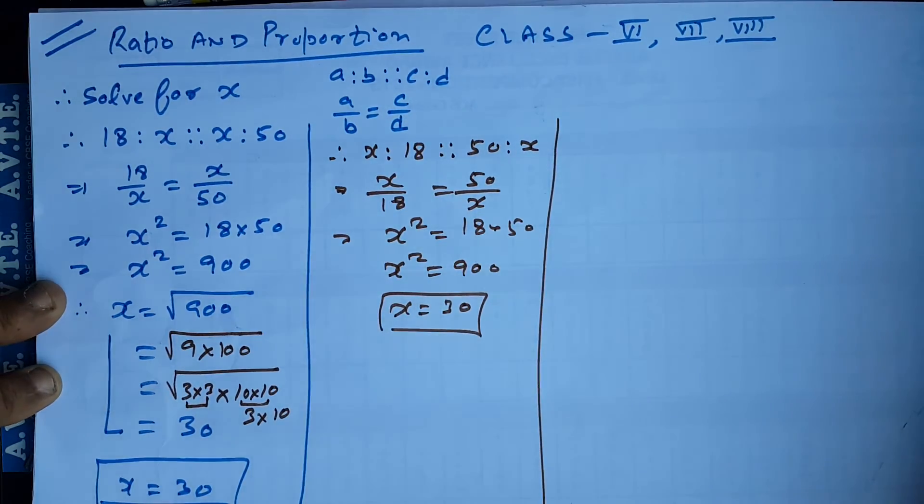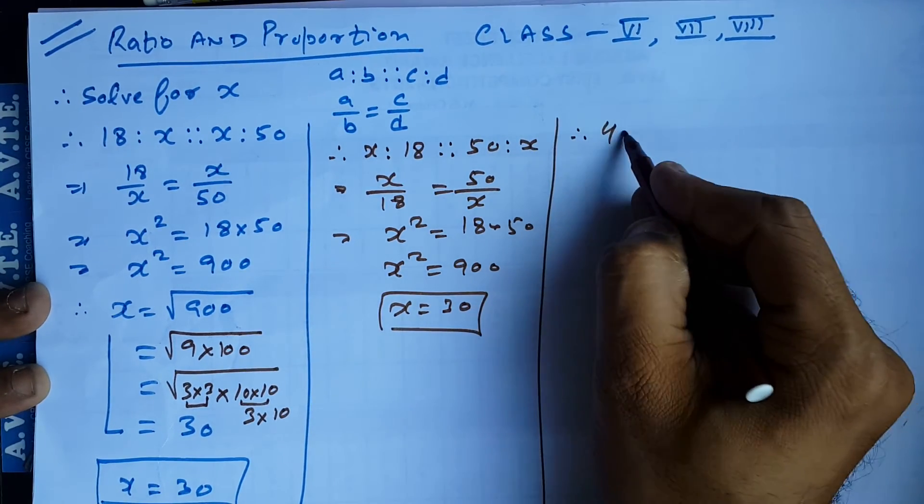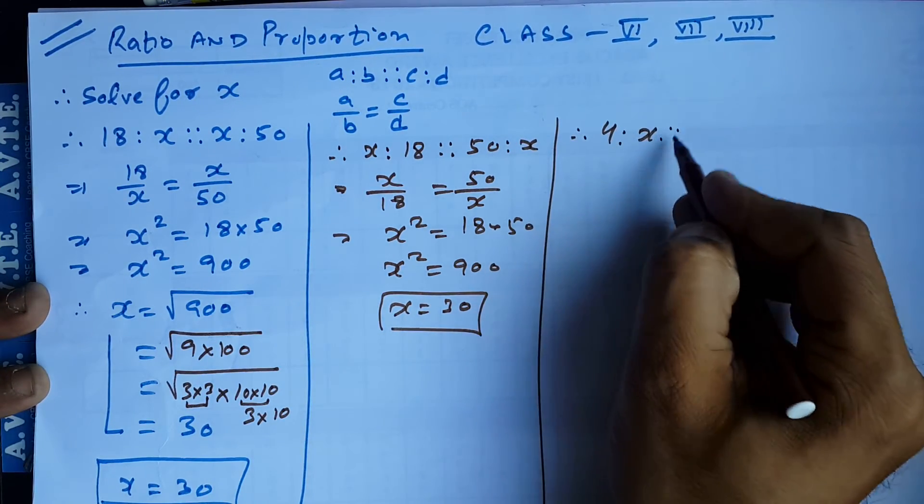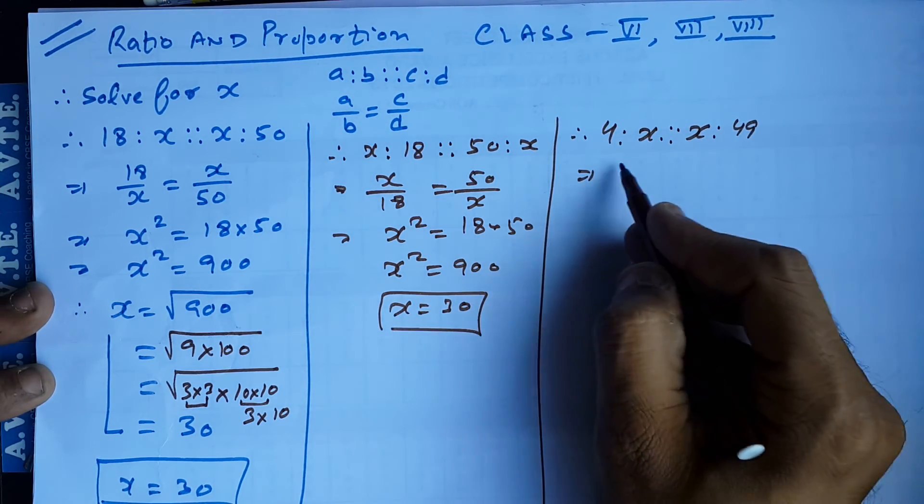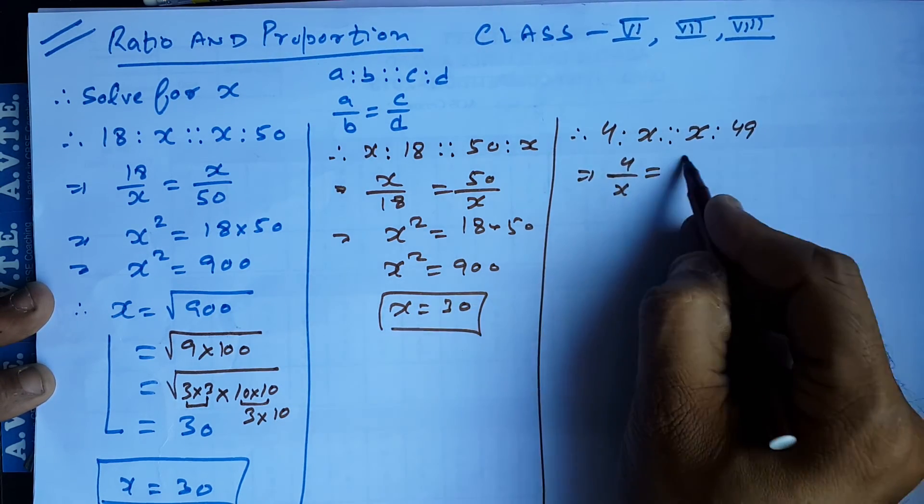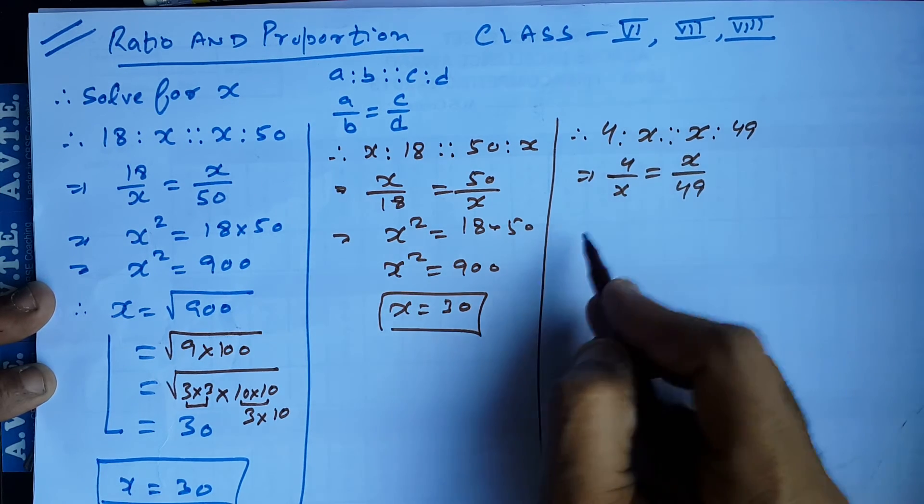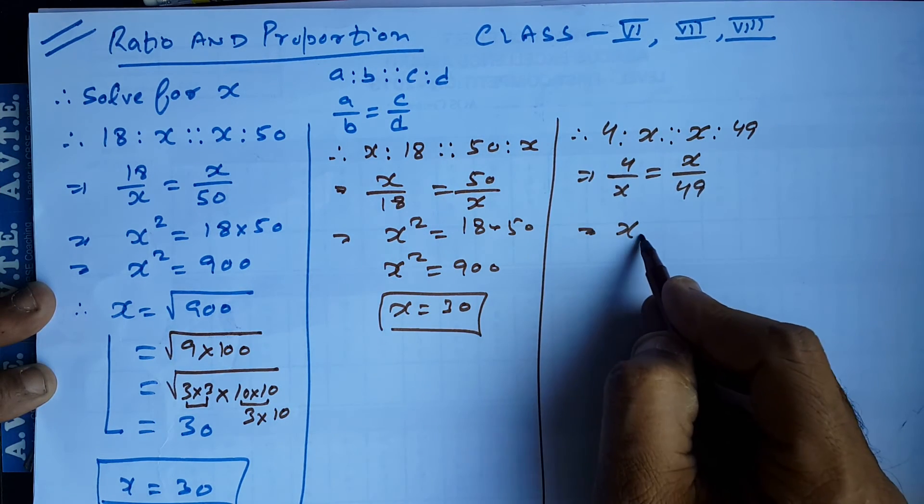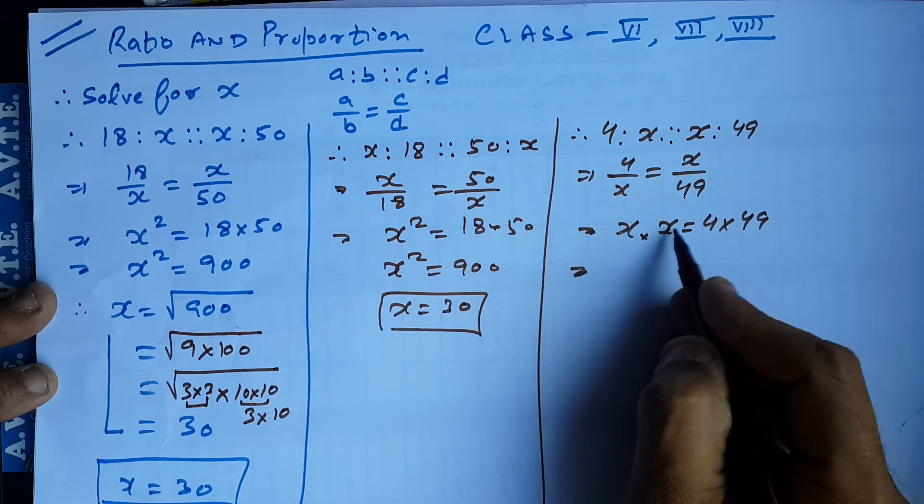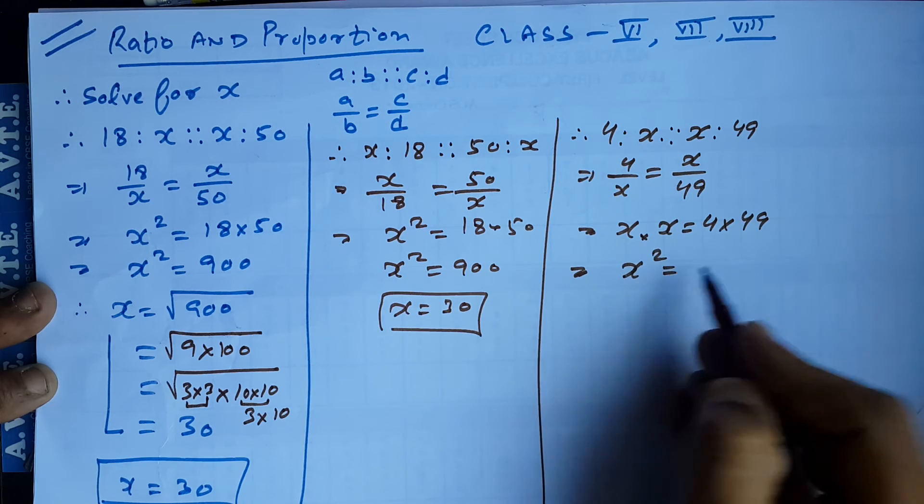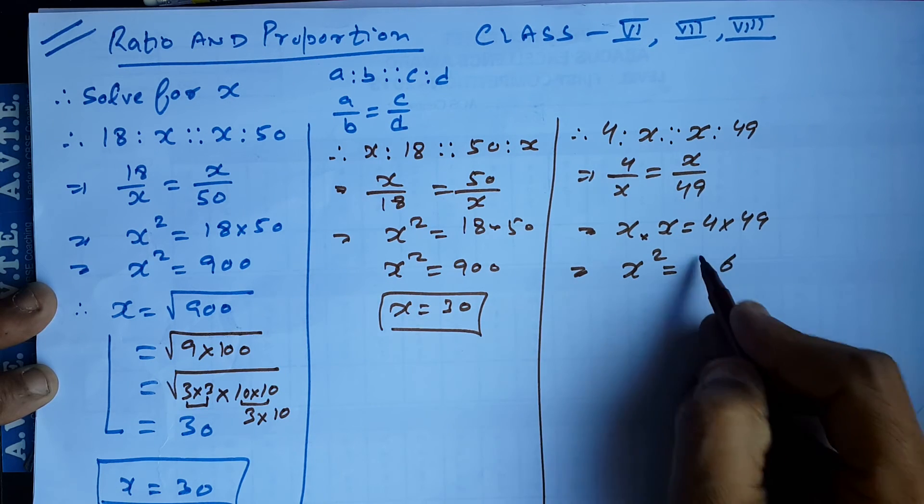Now we take another example. Like 4 is to x is to x is to 49. So this is 4 upon x is equal to x upon 49. This is x into x. I just write down x into x. 4 into 49 and x into x is x squared and 4 into 49 is 196.